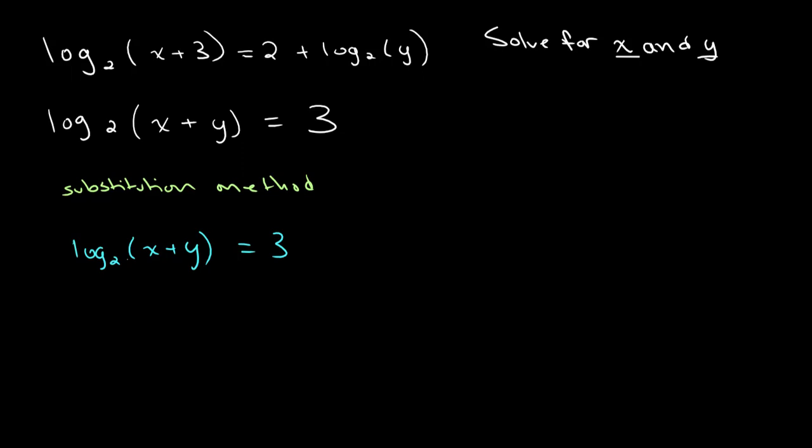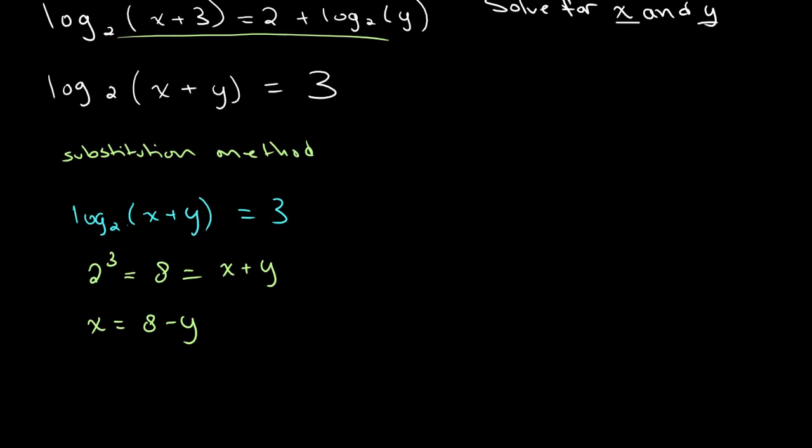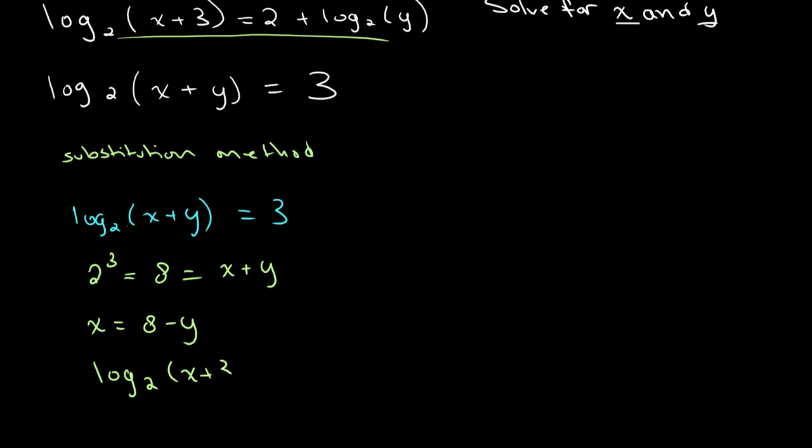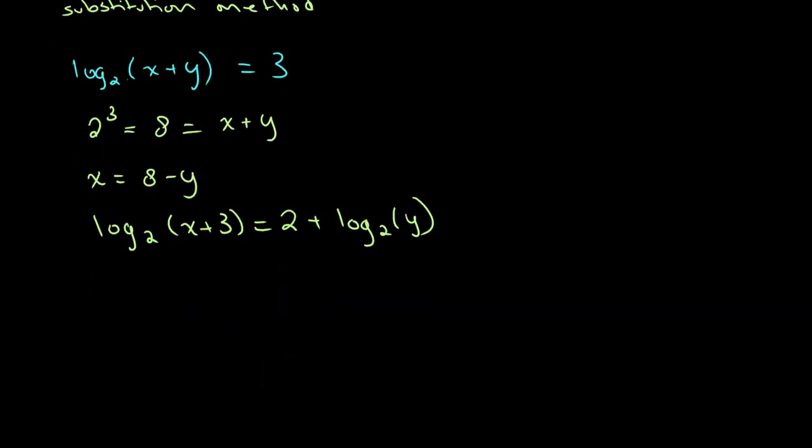So we can open this up, we have log base 2 of x plus y is equal to 3. Then, knowing how logarithms work, we get 2 to the third, which is 8, is equal to x plus y. And from this, we can get x is equal to 8 minus y by subtracting y from both sides. So, now we can plug this into our other equation. Let's rewrite our other equation down here. We have log base 2 of x plus 3 is equal to 2 plus log base 2 of y. And we can plug in x over here as 8 minus y.